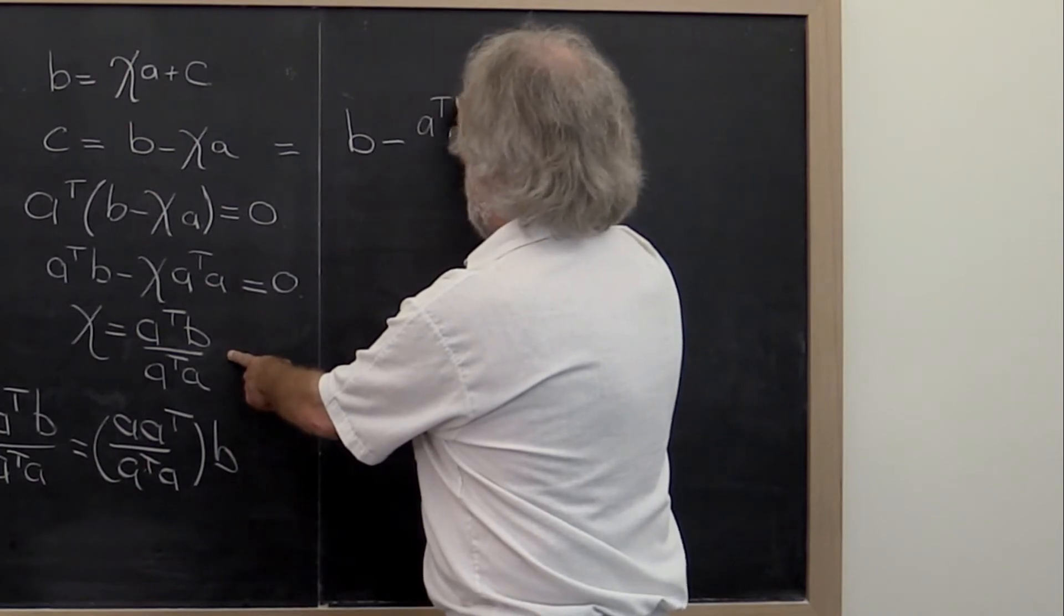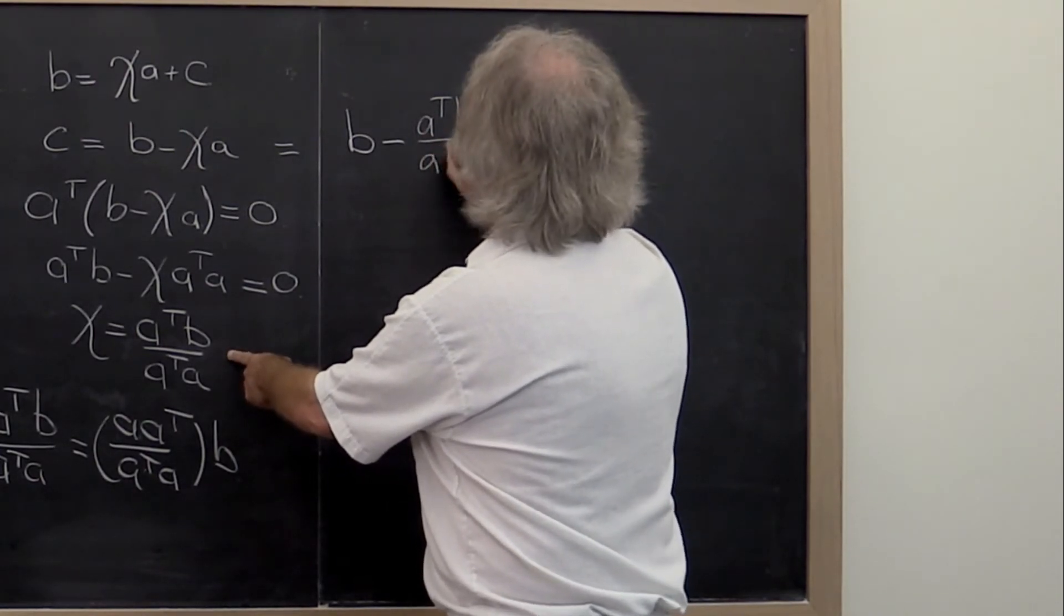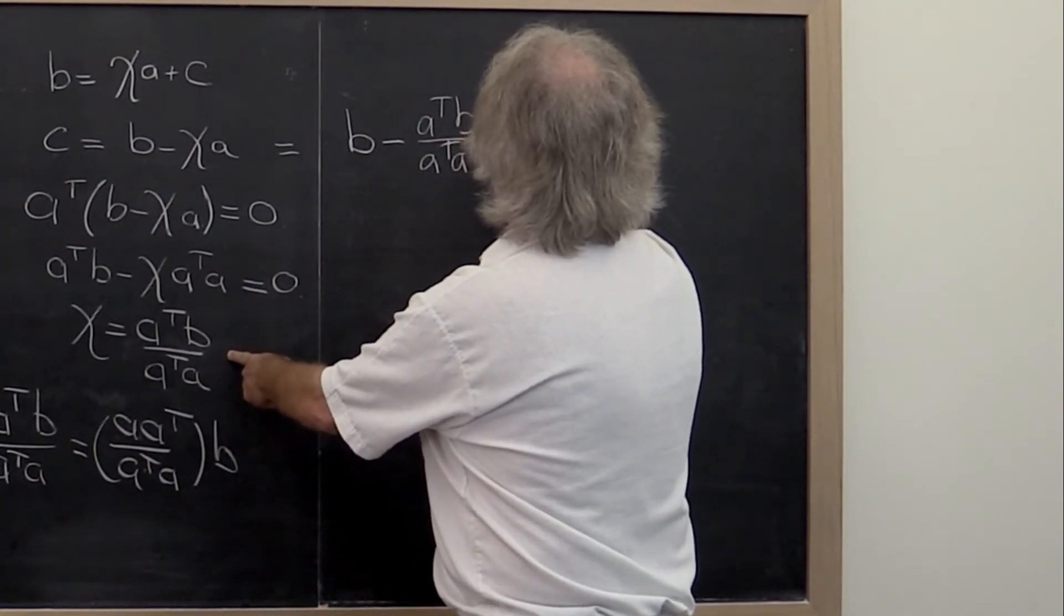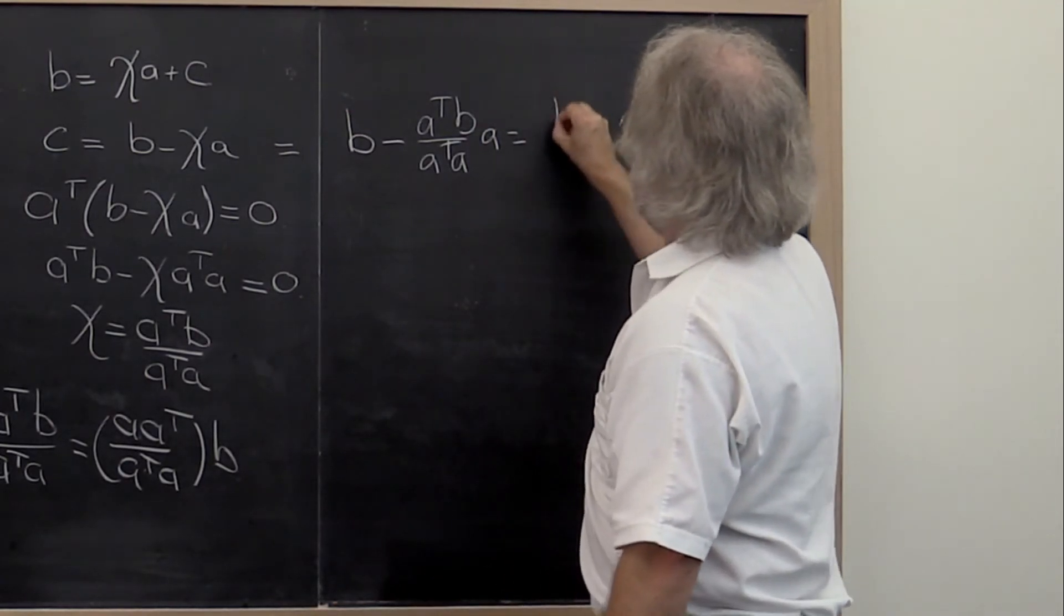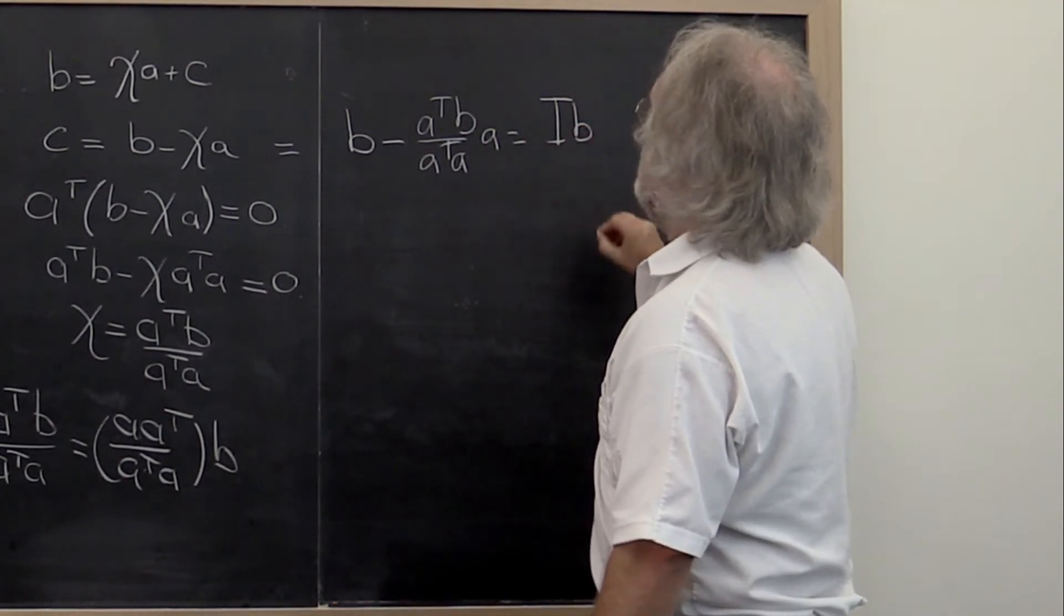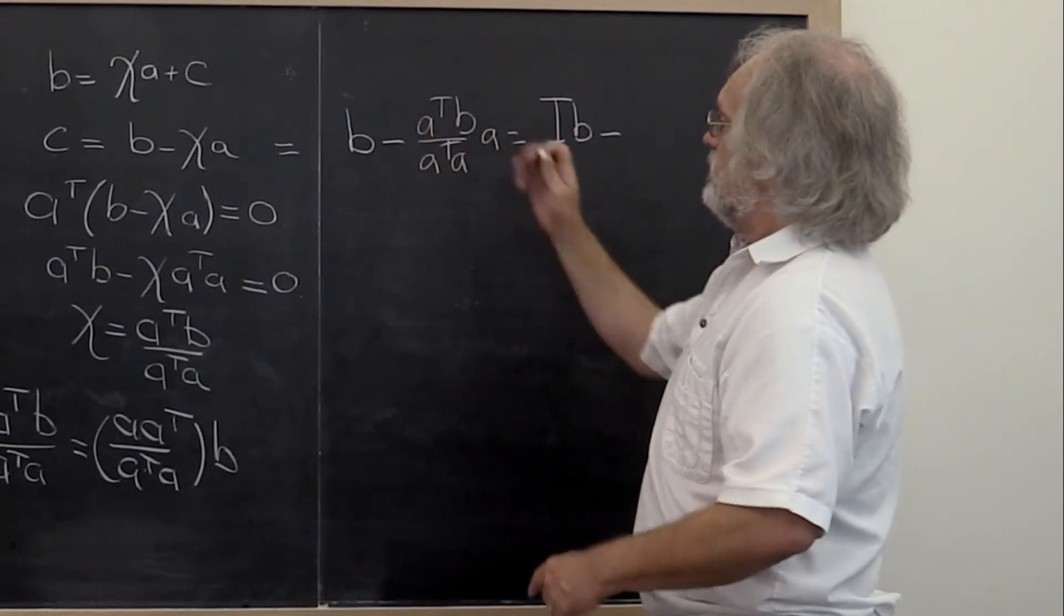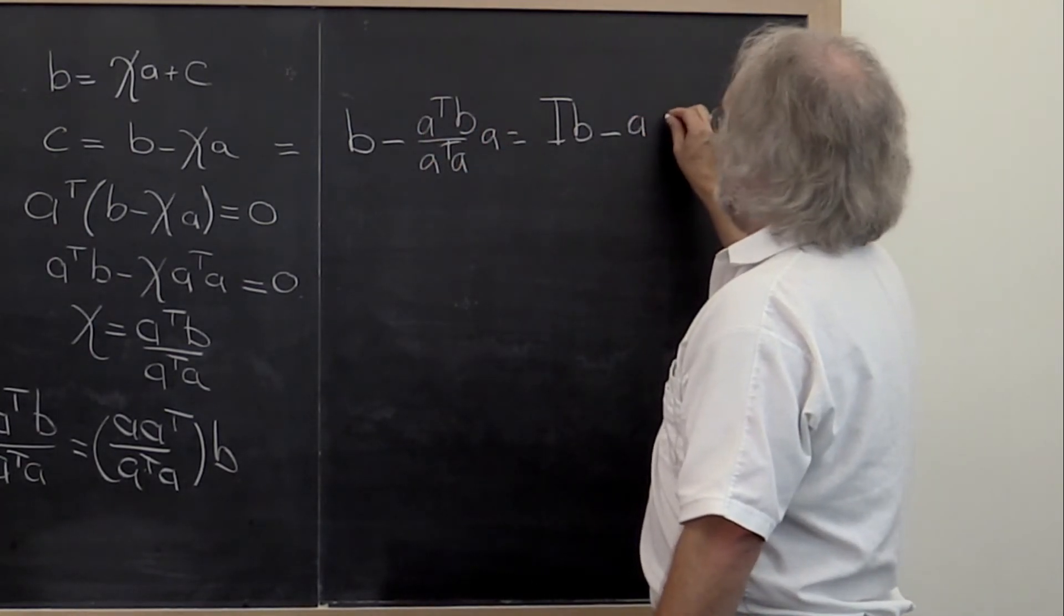So we get A transpose B divided by A transpose A times A, which we can then rewrite as the identity times B minus, and then we can do the same trick of rearranging this.